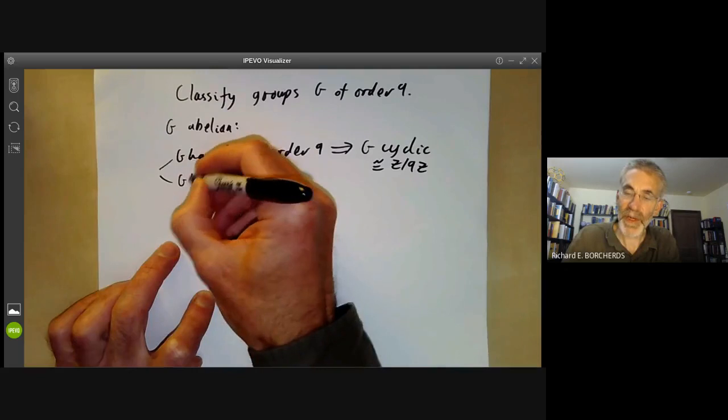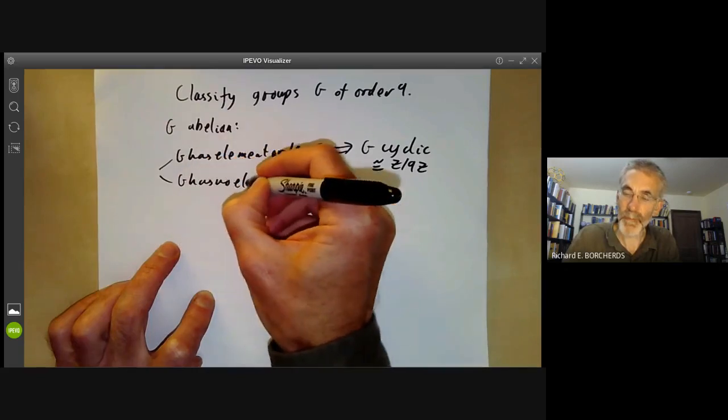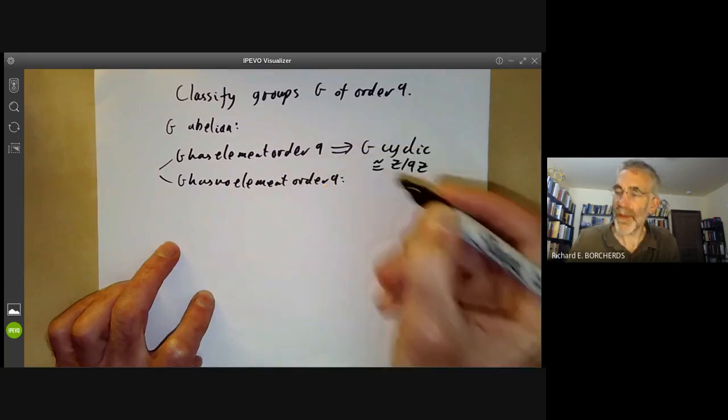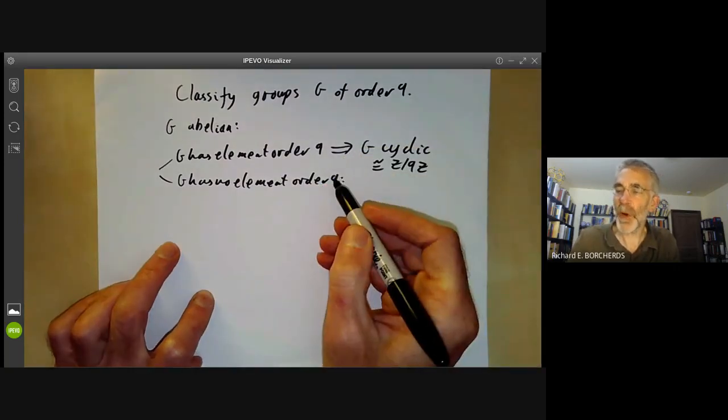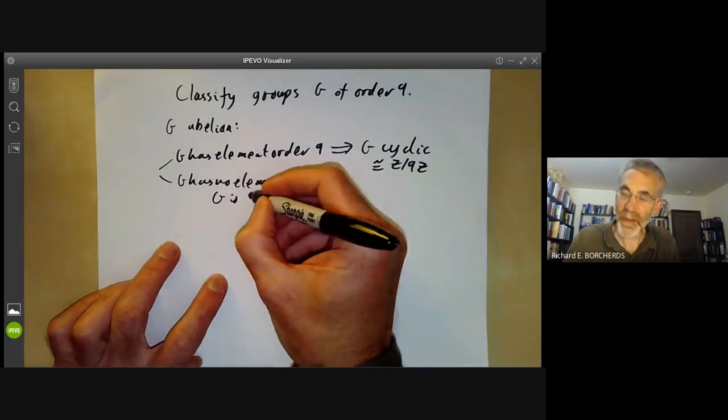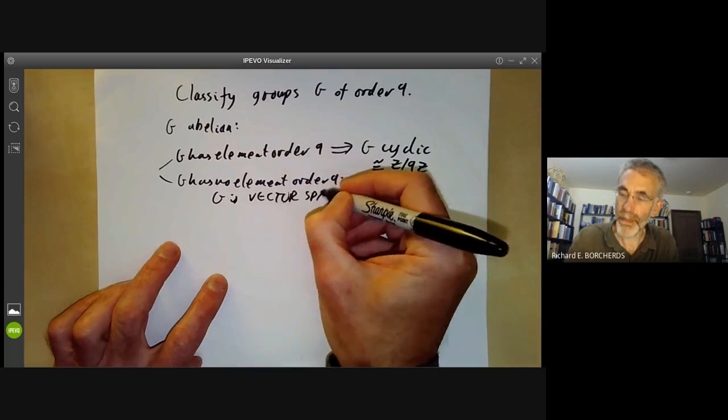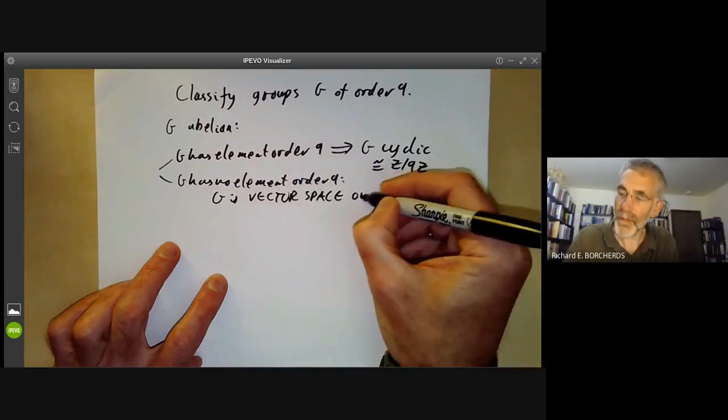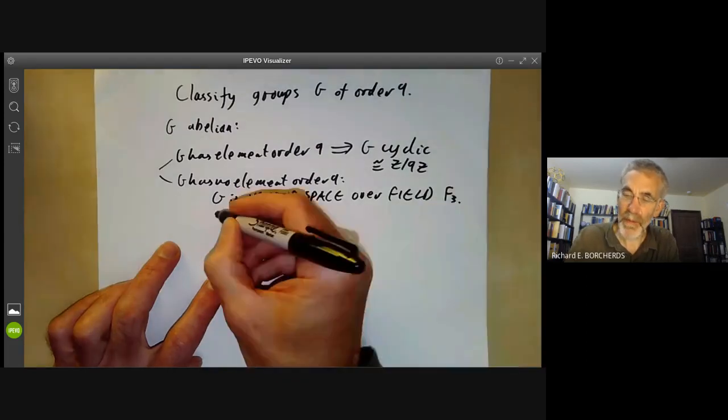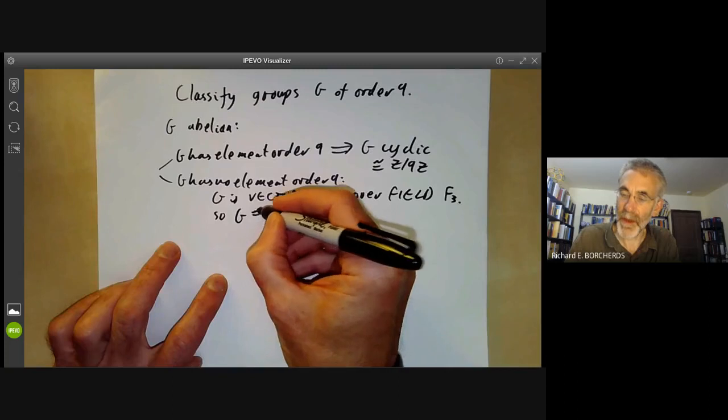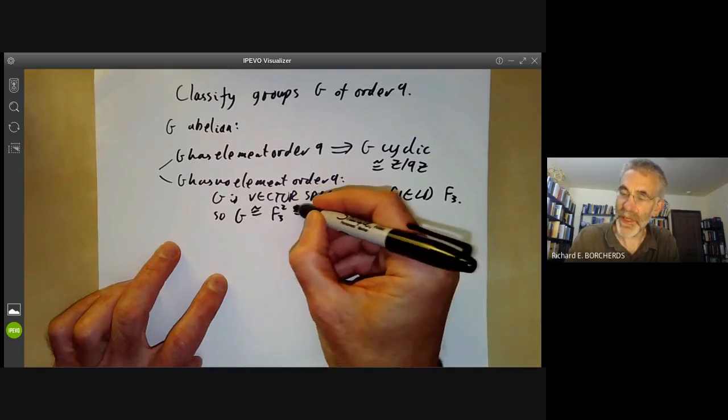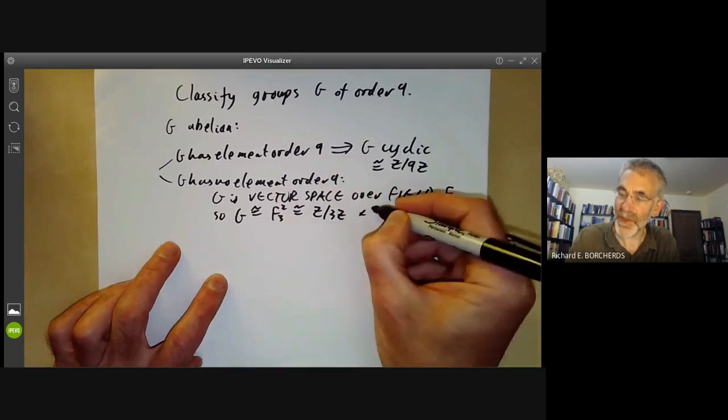If G has no element of order nine, then that means every element is order three or one. So if you write G additively, this means G is a vector space over the field of three elements. So G is isomorphic to two dimensional vector space, which is just Z modulo three Z times Z modulo three Z.